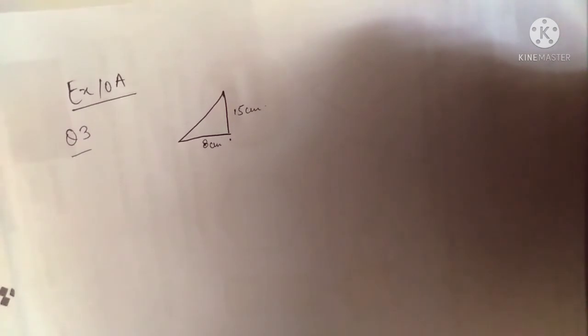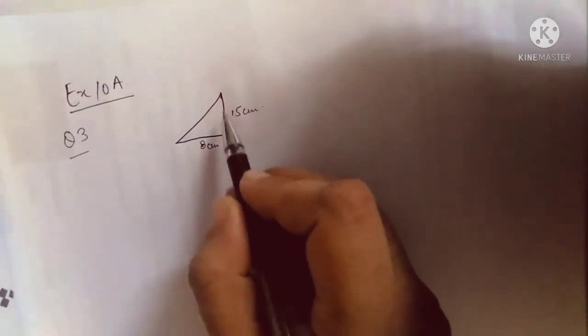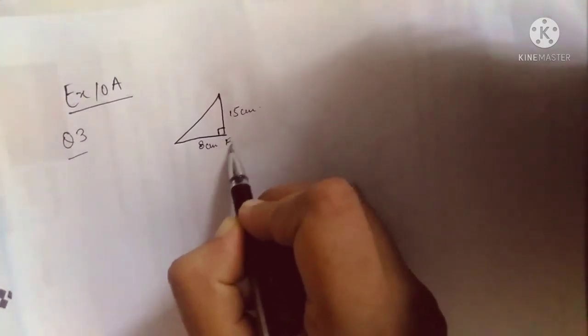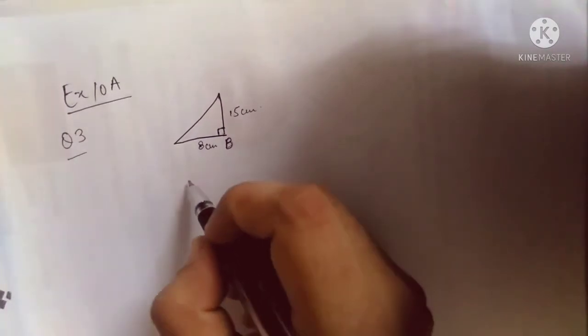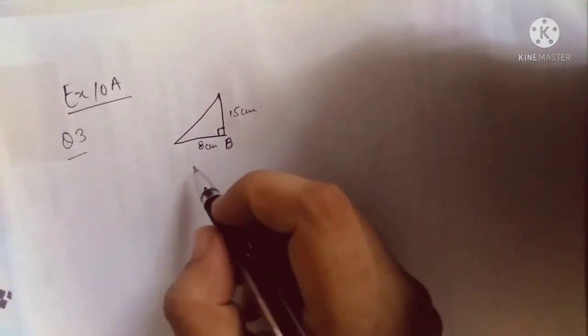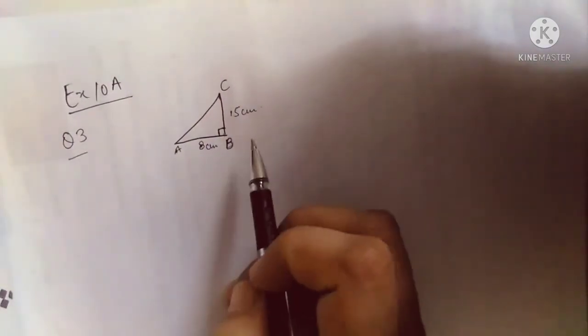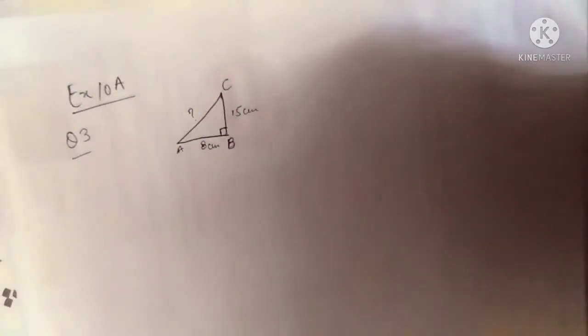Angle B is equal to 90 degrees and it's at B, so the line which goes straight up is your 90-degree angle. This is B because they have told you that angle B is equal to 90 degrees. So this is A and this is C. Your AB is 8 centimeters, BC is 15 centimeters, and they are asking you to find out the length of AC.